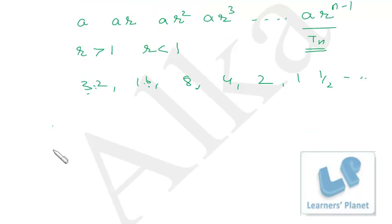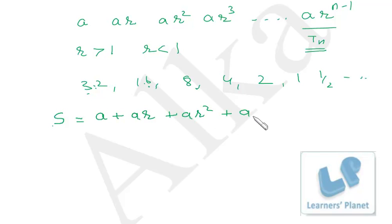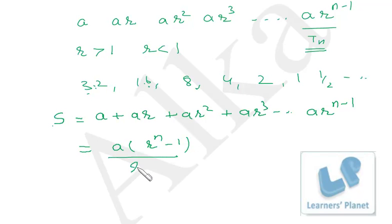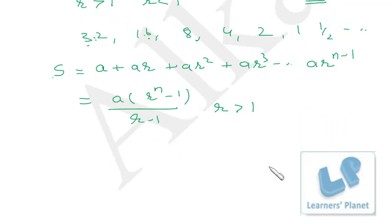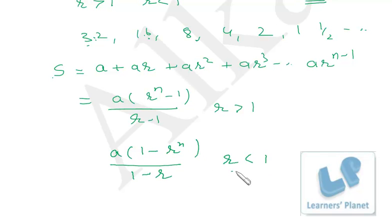The sum of a geometric progression S = a + ar + ar² + ar³ + ... + ar^(n-1). The formula is: S = a(r^n − 1)/(r − 1) if r is greater than 1, and S = a(1 − r^n)/(1 − r) if r is less than 1. Both formulas are essentially the same — we just write r−1 or 1−r in the denominator depending on whether r is greater or less than 1.